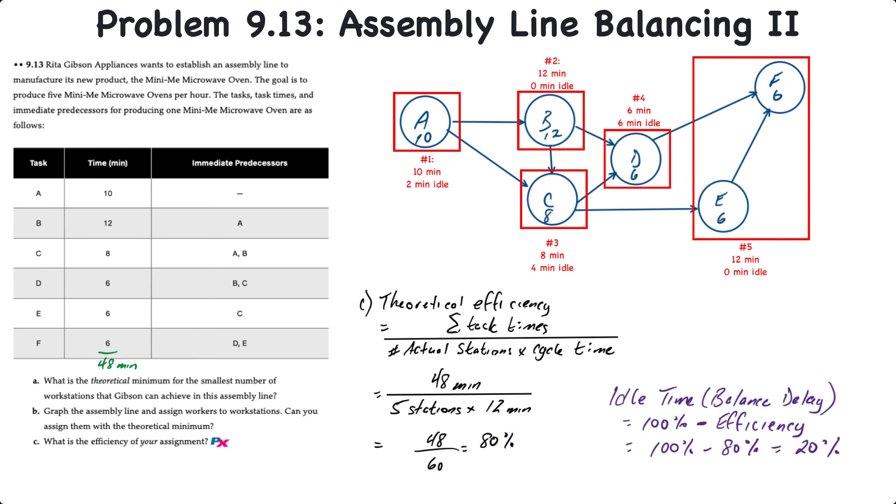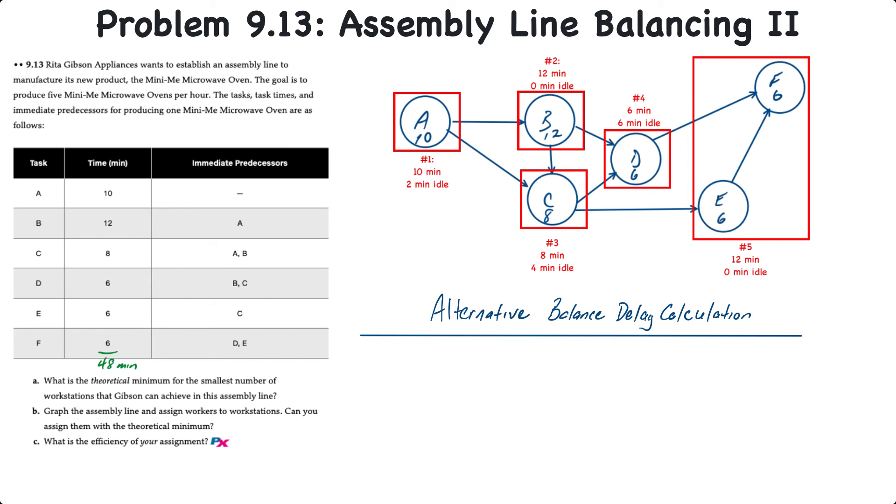The flip side of efficiency, of course, is idle time or balance delay, and that's equal to 100% minus the efficiency, which gives us 20% balance delay. Another way to calculate the idle time or balance delay without first calculating the efficiency is simply to add up all of the idle time from the workstations and then divide by the actual number of stations times the cycle time.